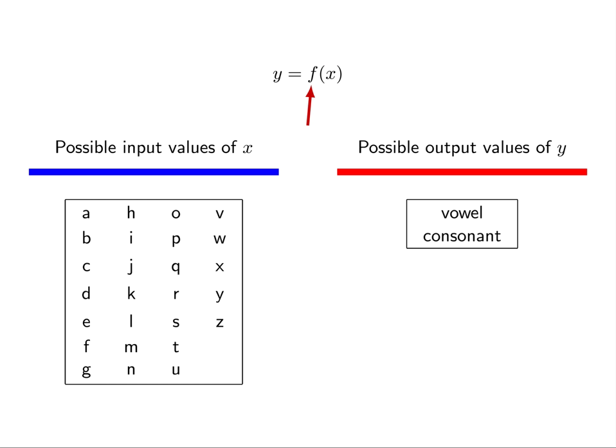Eventually, we might want to build a neural network that implements this function. Given such a neural network, we could provide the network with an input that represents one of the letters in the English alphabet. Given this input, the neural network would calculate an output value.